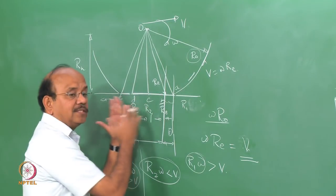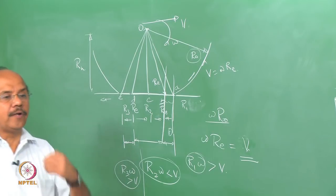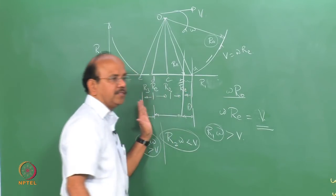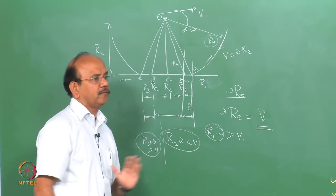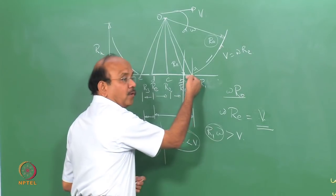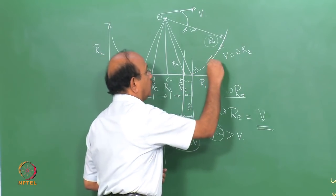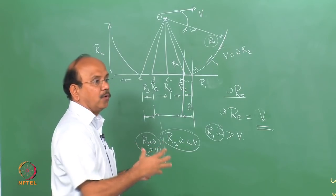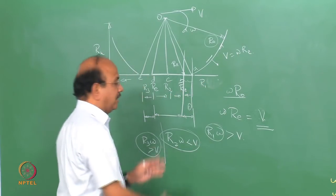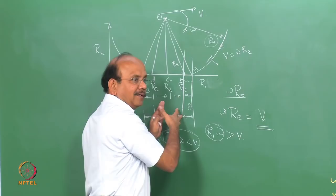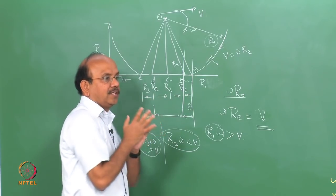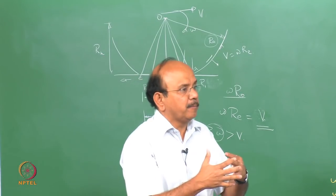There are regions where the tendency for the tread to slip will be different. In one region the tread wants to go faster — it has a tendency to slip in one direction. In another region the tread goes slower, and in yet another region it goes faster again. So there are three regions in which the tread wants to go faster or slower.